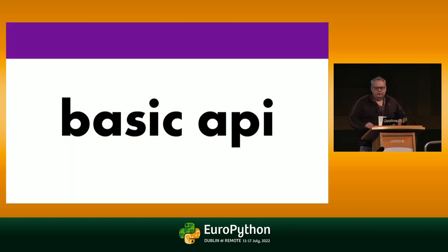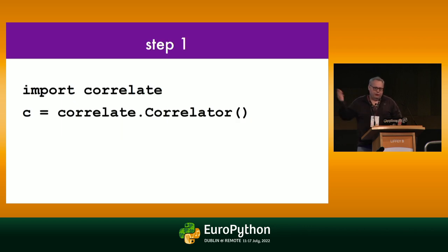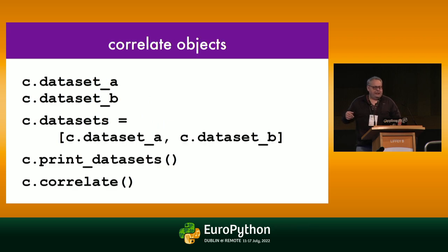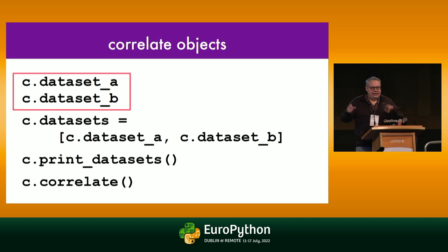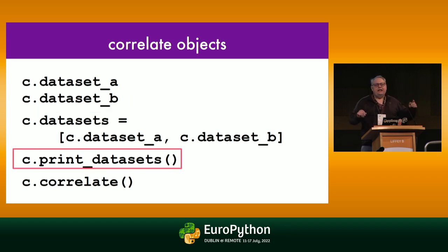We're going to start with the basic API. When I started out I asked, how do I even represent this so I can write a library to solve this problem? You import the Correlate library and create a Correlator object. The Correlator object has datasets A and B — those are the two datasets you stuff your data into. There's also a list in case it's convenient to iterate over them. Print datasets is just for debugging — it dumps the contents of your datasets to standard out.